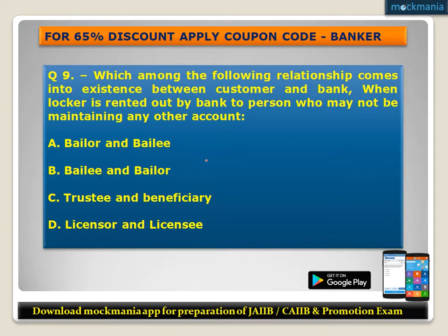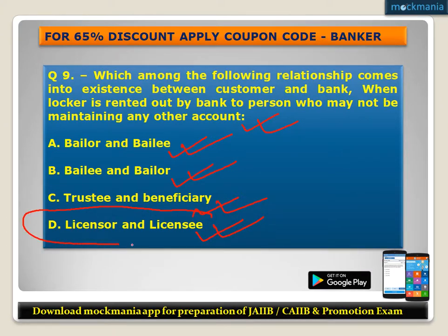Question number nine: Which among the following relationships comes into existence between customer and bank when a locker is rented out by the bank to a person who may not be maintaining any other account? Options: A) bailor and bailee, B) bailee and bailor, C) trustee and beneficiary, D) licensor and licensee. The correct answer is licensor and licensee.